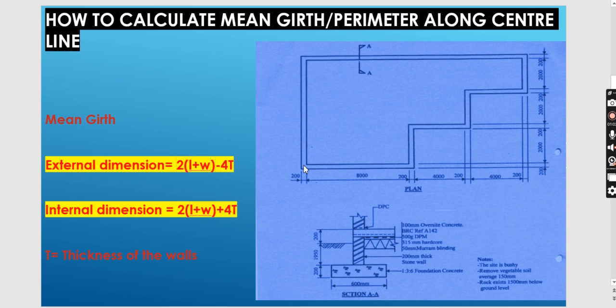Now, when you are getting the perimeter, we are going to use this perimeter when we are taking off quantities of excavation. We need the perimeter for foundation concrete, and then when we are also doing the foundation wall. So we need the mini guard, and it's very important. If you go wrong for the mini guard, it means the measurements for those three items are definitely wrong.